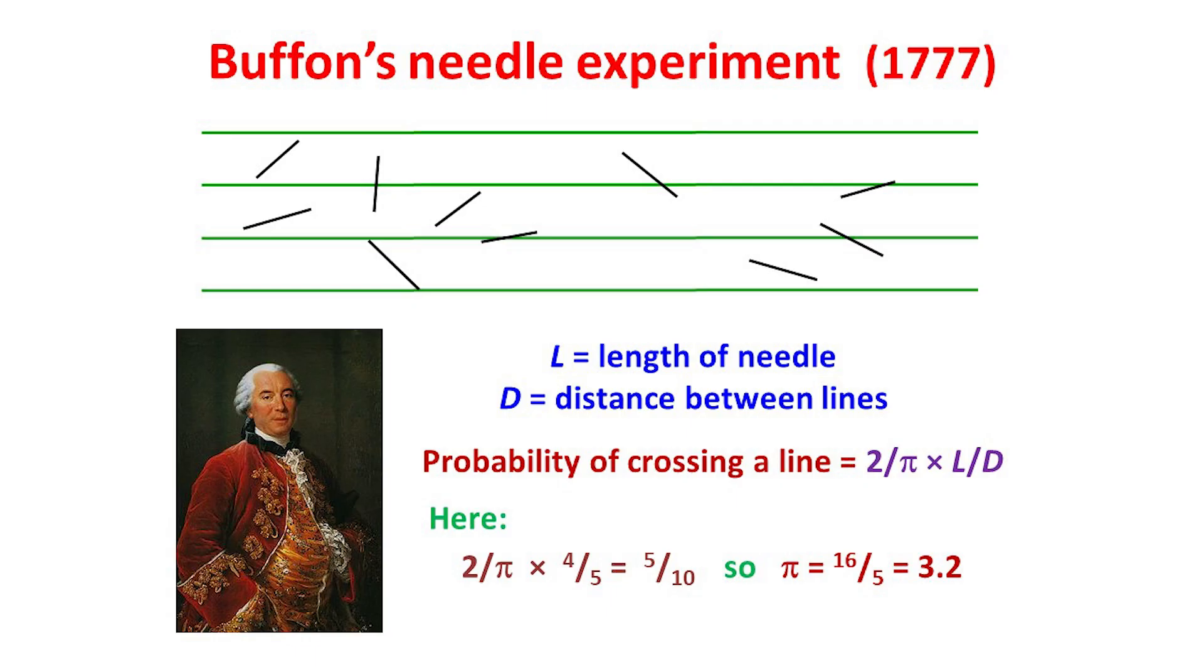Let's now have a complete change of pace and look at a very different way to approach pi. It takes the form of an experiment, and is due to the French naturalist and mathematician, the Comte de Buffon, shown here. Suppose you throw a large number of needles or matchsticks of length L onto a grid of parallel lines at a distance of d apart, and record the proportion of the needles that cross a line. It can then be proved that this proportion is 2 over π times L over d, from which we can calculate a value for pi.